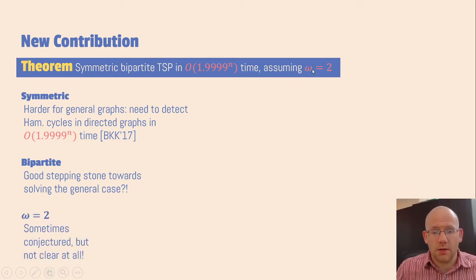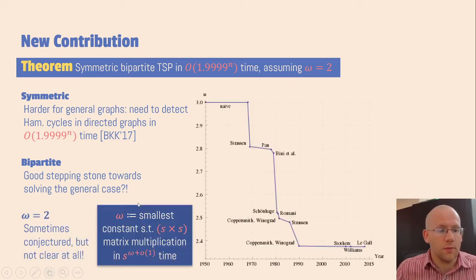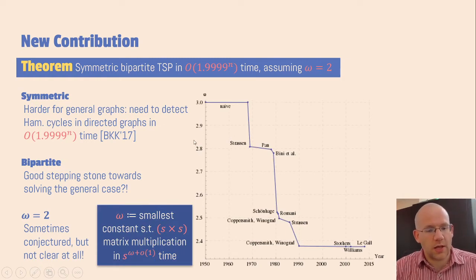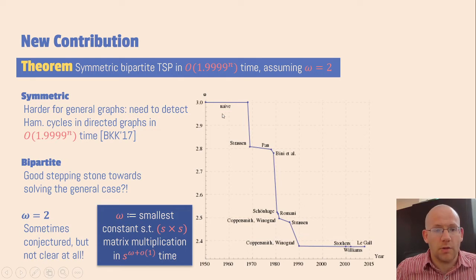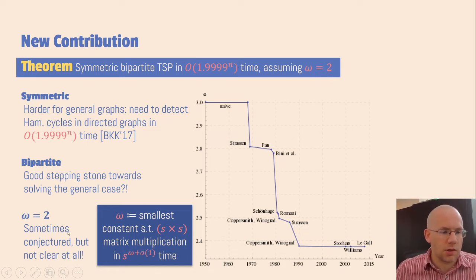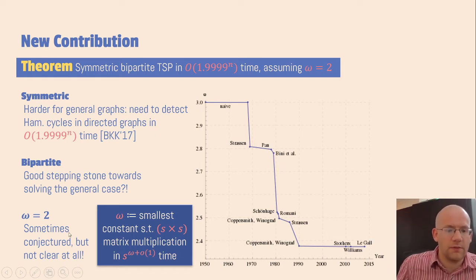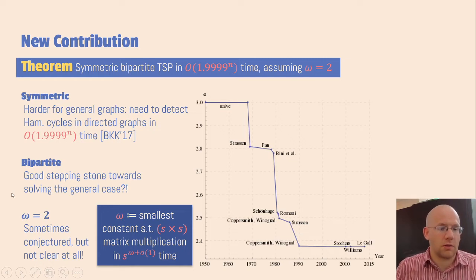There is the assumption omega equals 2. Omega is the smallest constant such that n times n matrices can be multiplied in time n to the power omega plus little-o of 1. This assumption is highly non-trivial, and sometimes this conjecture is mentioned as possibly true, but it's not clear at all, and I don't even dare to say what the common consensus among experts is at the moment.